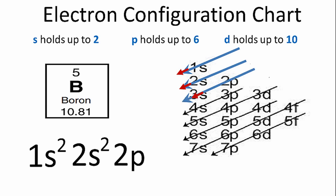We'll go down the next row, and we have 2p. p orbitals hold up to six electrons, but we only need one. So we're going to put a 1 right here.